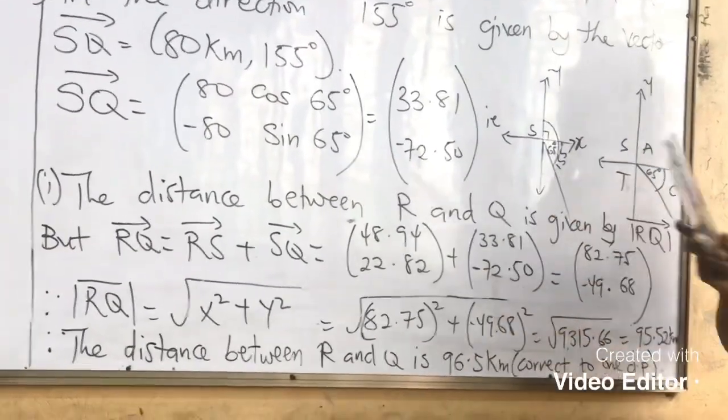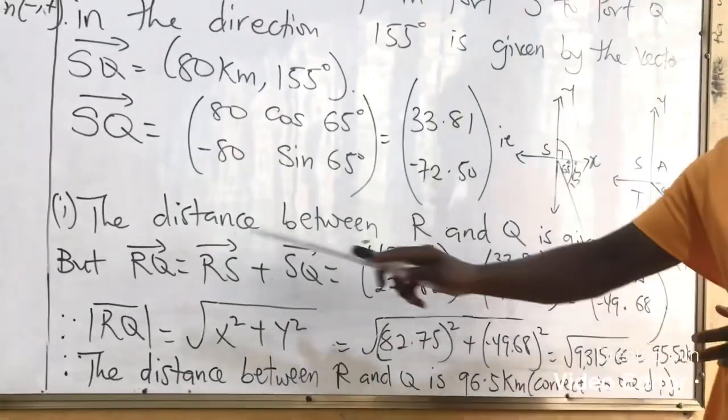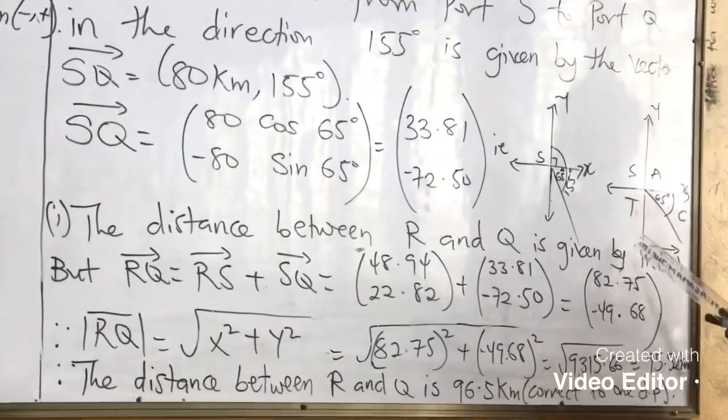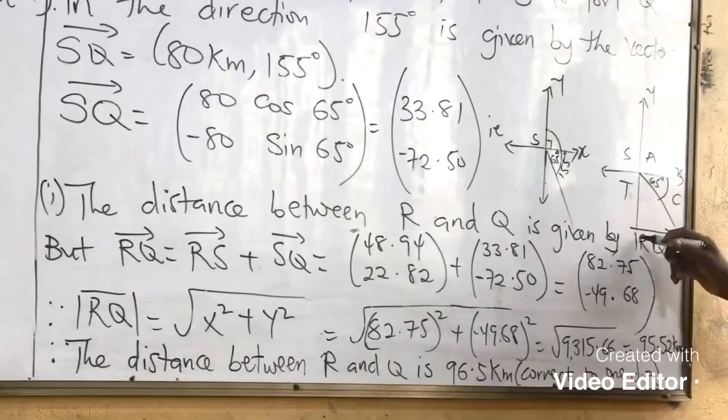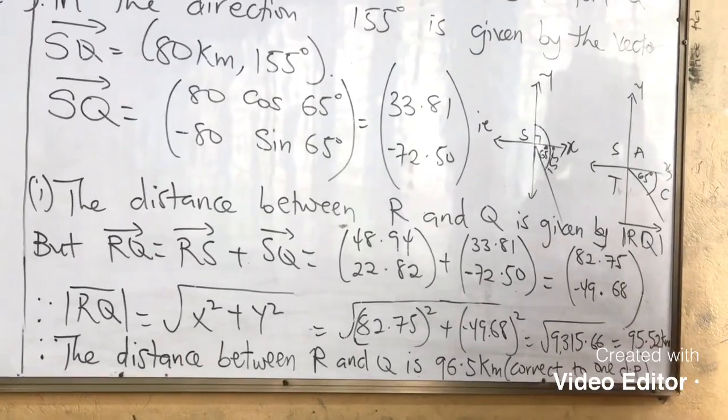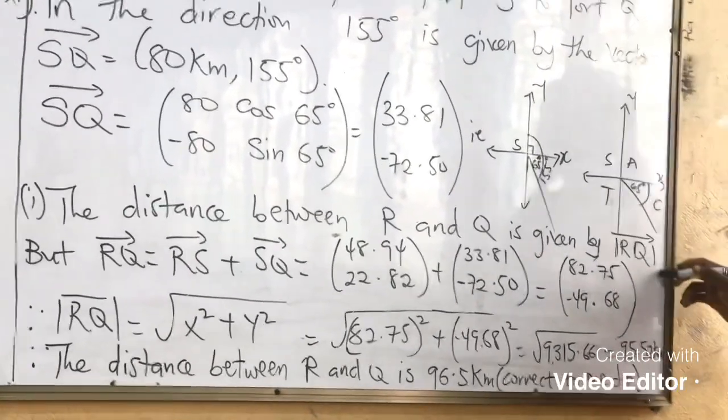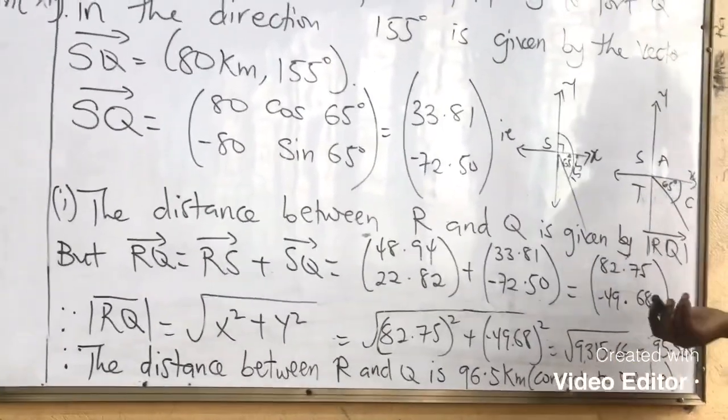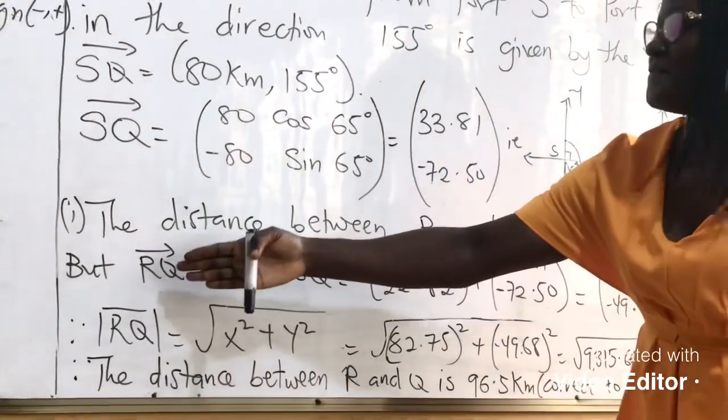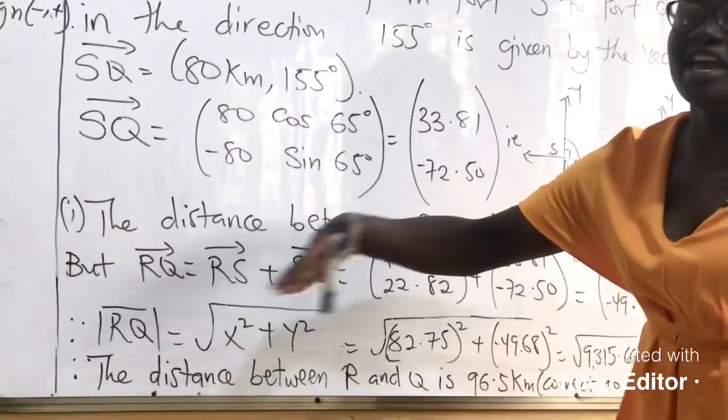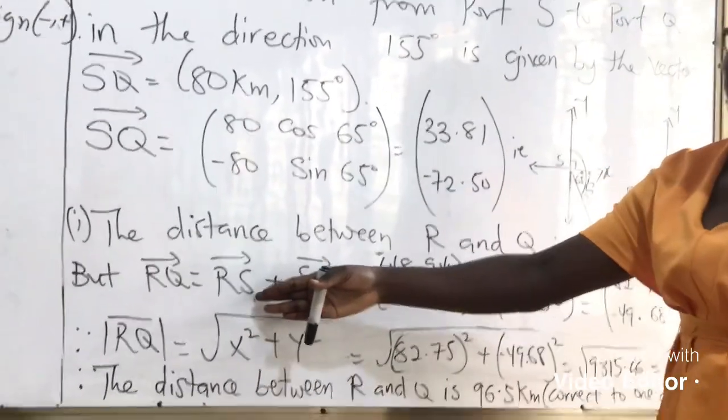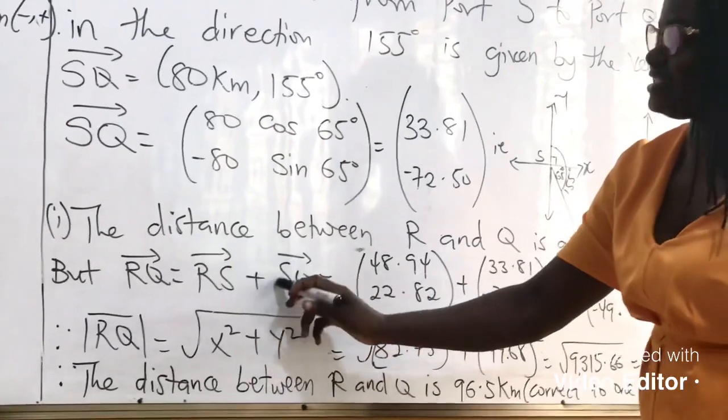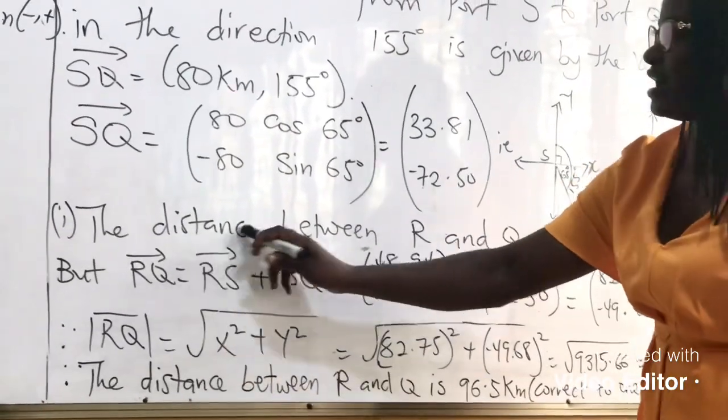Now we come to the question. The distance between R and Q is given by, so that is how we write it. We write two bars across it. So this time we show the distance of a vector, but we don't show the vector yet. So vector RQ is equal to vector RS plus vector SQ. So that our S and S cancel out to give you vector RQ.